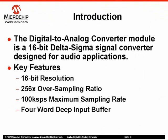The Audio Digital to Analog Converter module is a 16-bit Delta Sigma signal converter designed for audio applications. The DAC provides two output channels to support stereo applications. Data input is in the form of a 16-bit digital value from the application program via the DMA module or the DAC data and control registers.